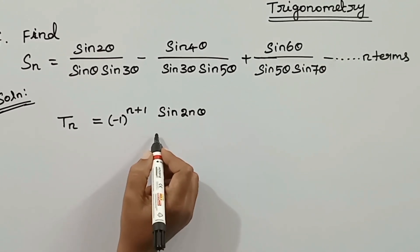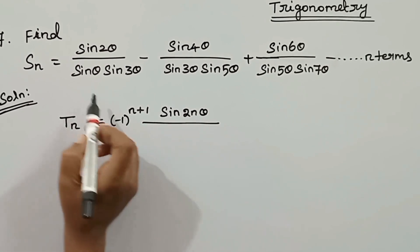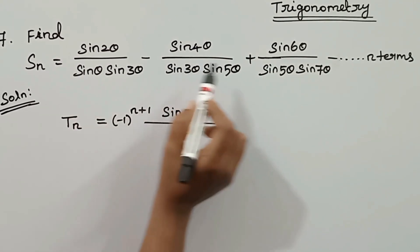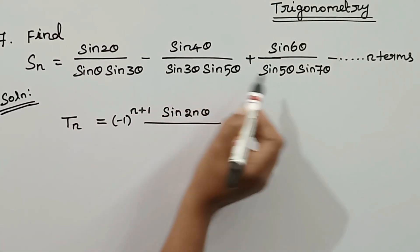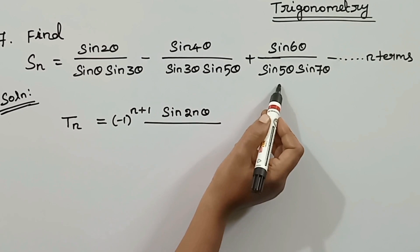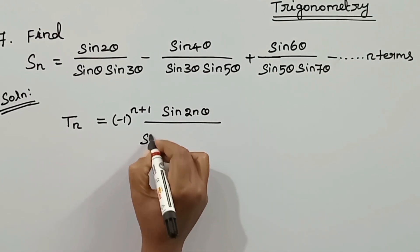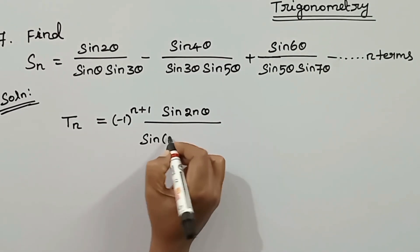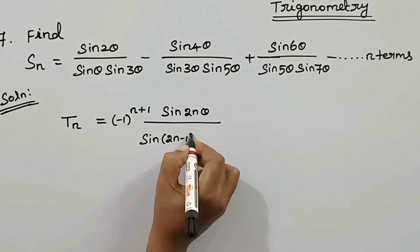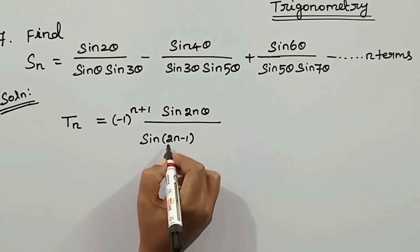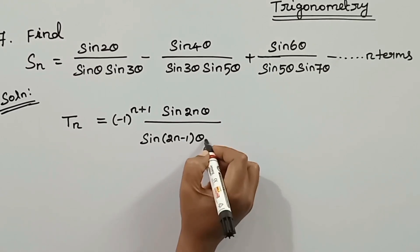The numerator is sin 2n theta. The denominator involves sin theta terms: sin theta, sin 3 theta, sin 5 theta. That is a sequence 1, 3, 5. We note that it starts at sin 1 and goes to sin(2n-1) theta. The odd numbers start at 1 and go to 2n-1 theta.